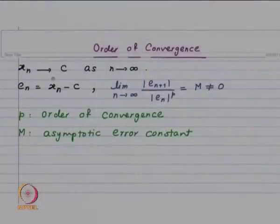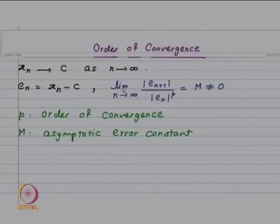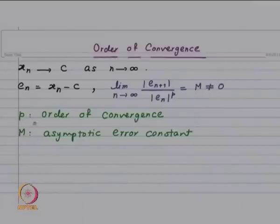We are going to show that in the case of fixed point iteration, p is equal to 1; in the case of Newton's method, it is equal to 2; and in the case of the secant method, it will be about 1.6 — better than linear but less than Newton's method, which gives quadratic convergence. First, let us show the linear convergence in the fixed point method.